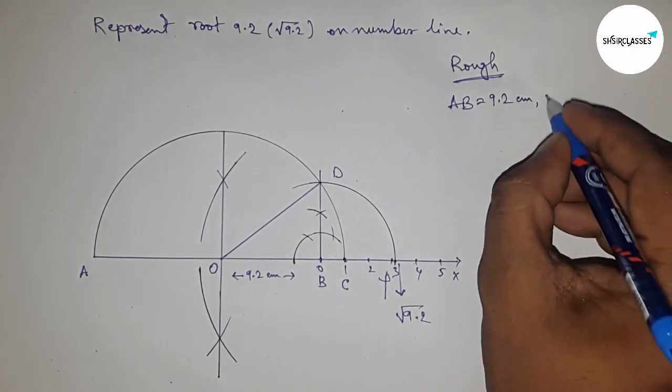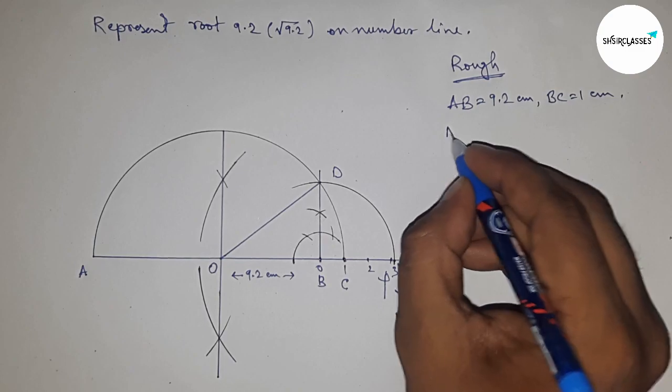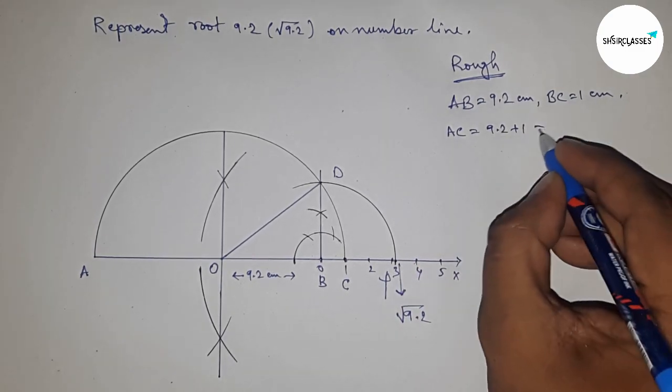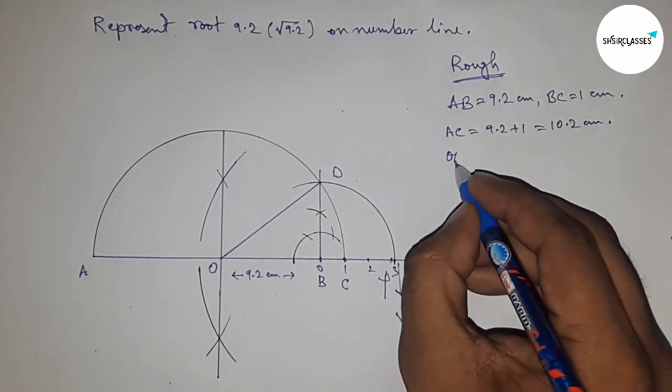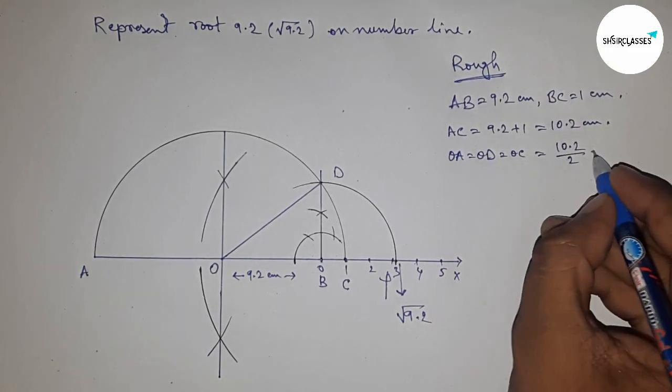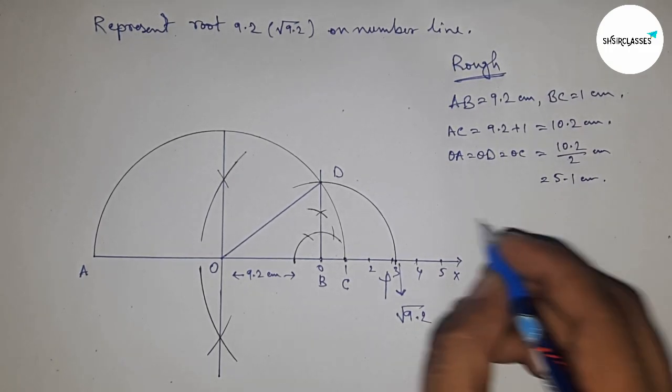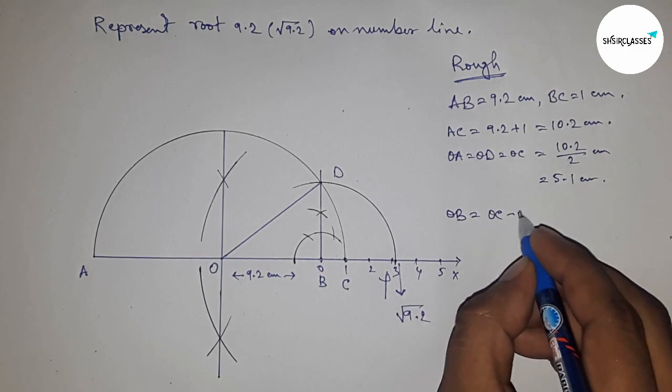Given AB = 9.2 cm and BC = 1 cm, so AC = 9.2 + 1 = 10.2 cm. The radius OD = OA = OC = 10.2/2 = 5.1 cm.